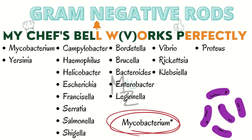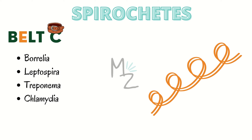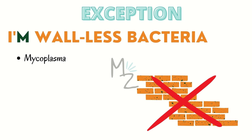As discussed earlier, spirochetes are spiral-shaped bacteria — you can see the orange-colored spiral. I've got a mnemonic for them: 'BELT C.' Spirochetes starts with S, which sometimes sounds like C. B is for Borrelia, E is for Leptospira — wait, L is for Leptospira, T is for Treponema, and C is for Chlamydia. I recently realized it may be pronounced 'Chlamydia' — if I'm wrong, please correct me in the comments.